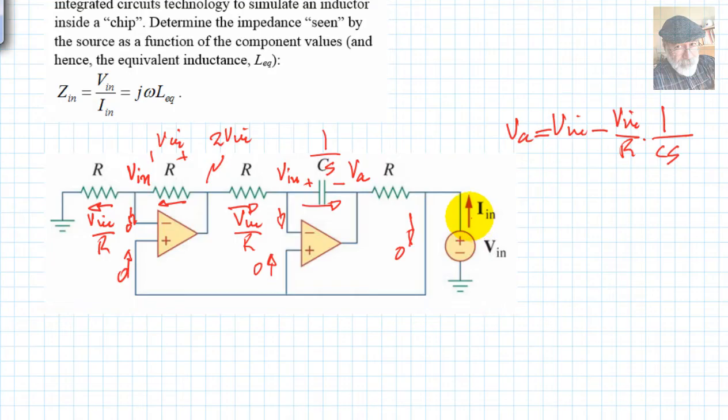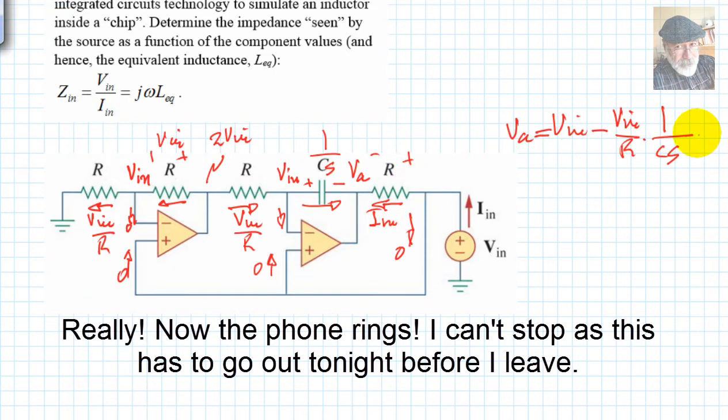So that means that all that current Iin is flowing through this resistor, this is Iin, producing a voltage drop there. And you can say that that is equal to V input minus the drop R times Iin.